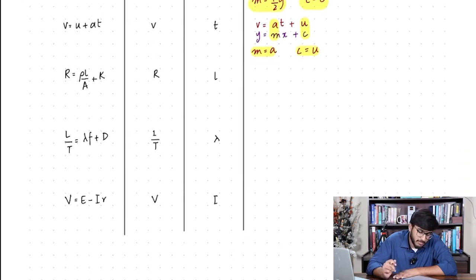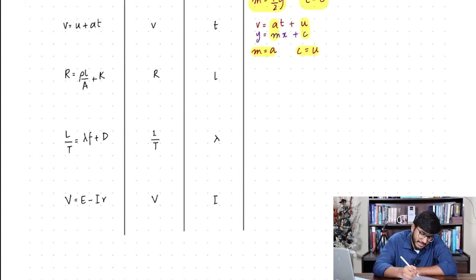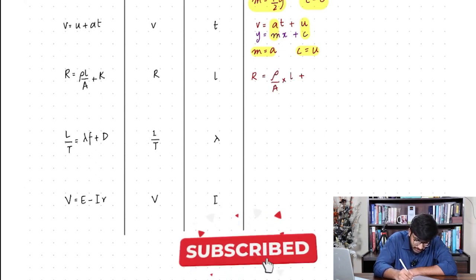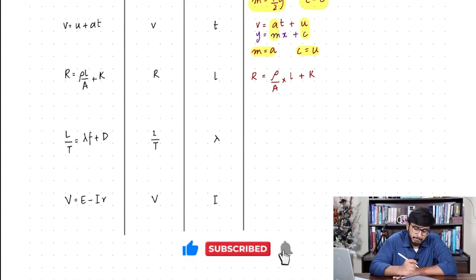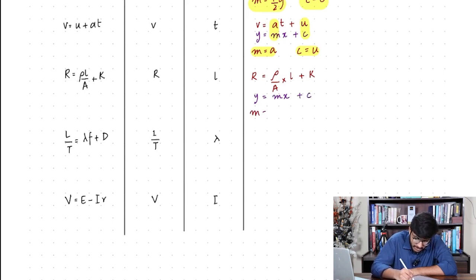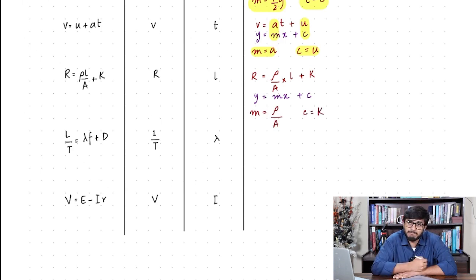Let's try another equation: r equals ρl over a plus k, with r on the y-axis against l on the x-axis. You can see that r equals (ρ/a) times l plus k. Comparing with y equals mx plus c, the gradient is equal to ρ over a and the y-intercept is equal to k. We simply compare it.